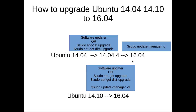This video demonstrates how to upgrade Ubuntu 14.04 and 14.10 to 16.04. If you want to upgrade from 14.04 to 16.04, you have to follow this path. First we have to upgrade from 14.04 to 14.04.4. For that we can use Software Updater or we can use these two commands. Then from 14.04.4 to 16.04, we need to use the update-manager -d command to upgrade.